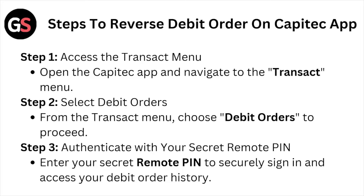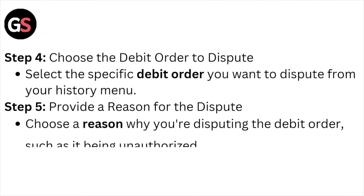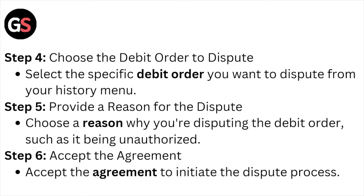Step number three, authenticate your secret remote PIN. Enter your secret remote PIN to securely sign in and access your debit order history. Step number four is to choose the debit order to dispute. Select the specific debit order you want to dispute from your history menu.